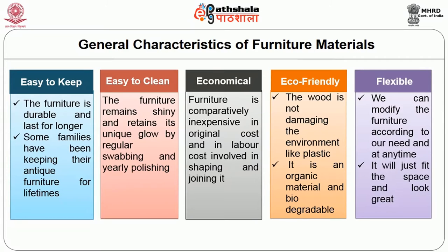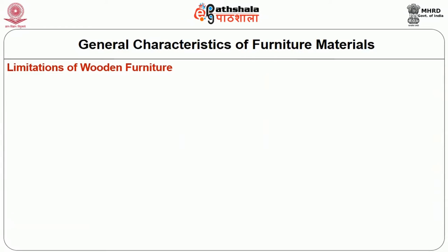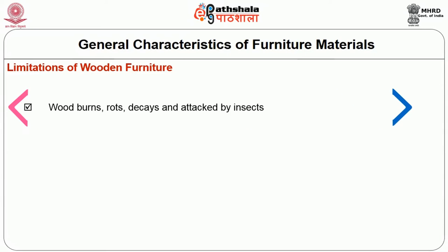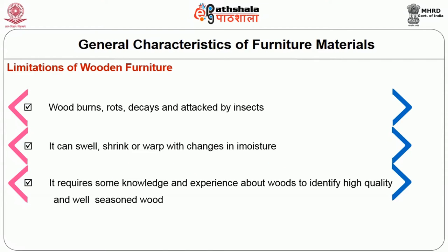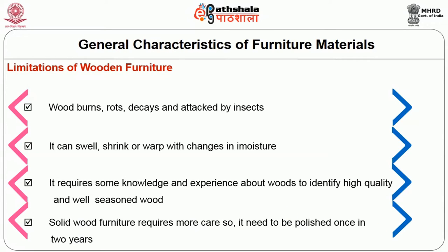Wood is flexible also — we can modify the furniture according to our need at any time, and it will just fit the space and look great all the time. There are also a lot of reasons for people to like solid wood furniture. At the same time, wooden furniture has few limitations. It burns, rots, decays and is attacked by insects. It can swell, shrink or warp with changes in its moisture content. It requires some knowledge and experience about woods to identify high quality and well seasoned wood. Solid wood furniture also requires more care and maintenance, and needs to be polished once a year to maintain its charm.